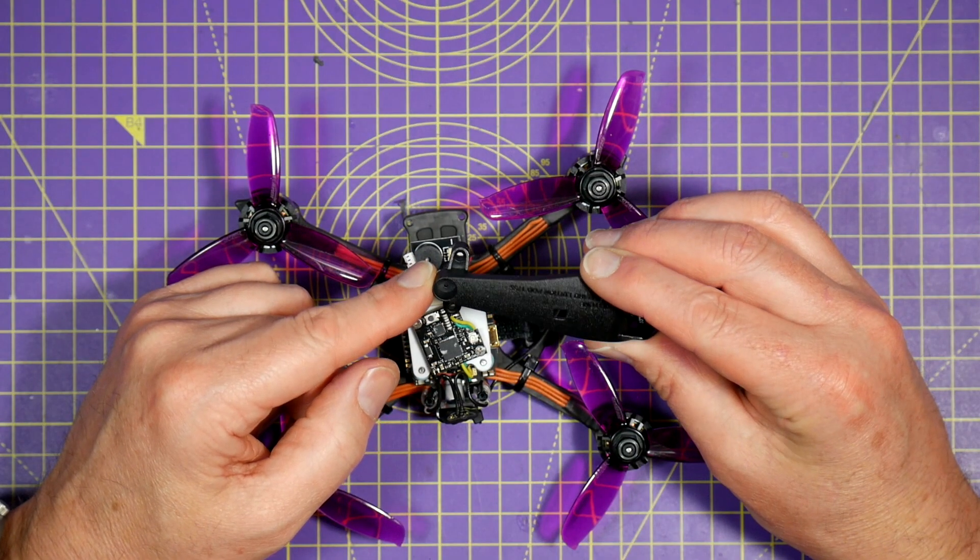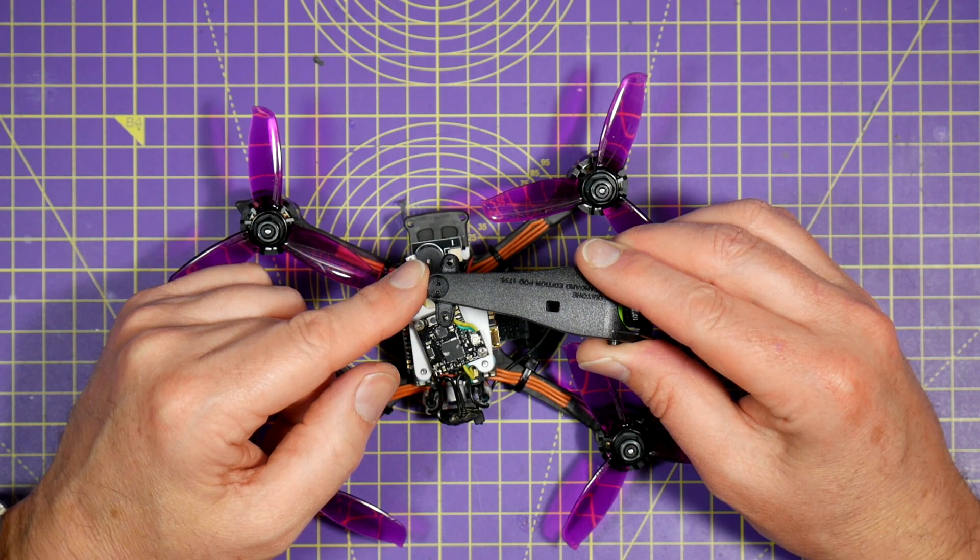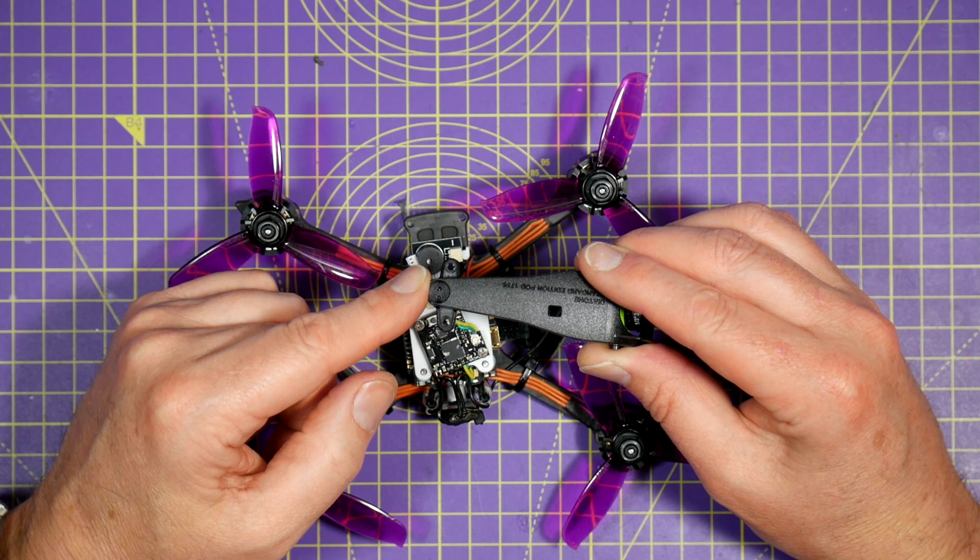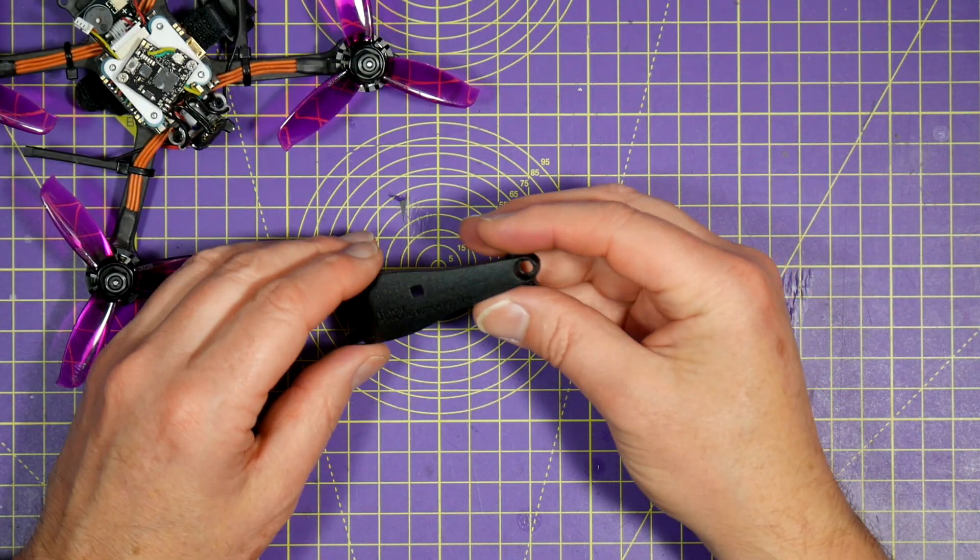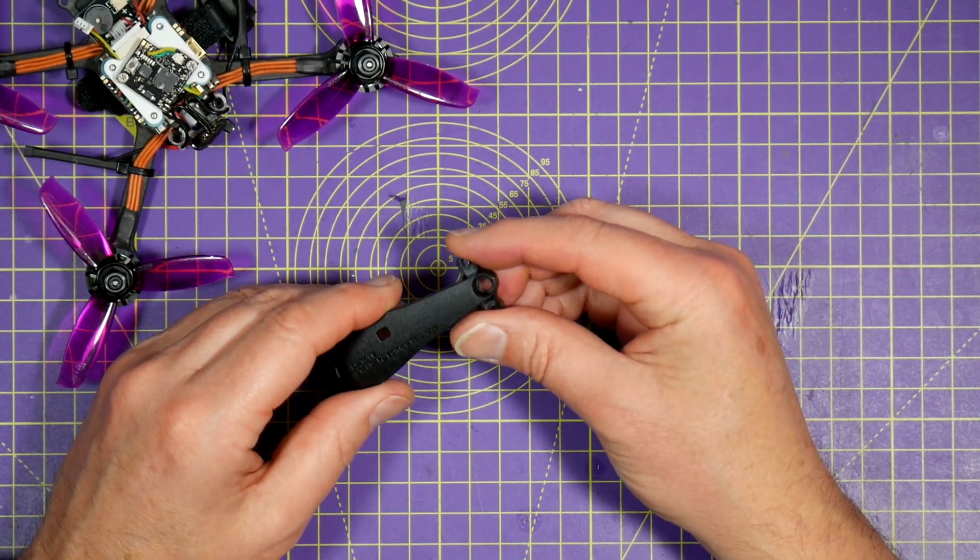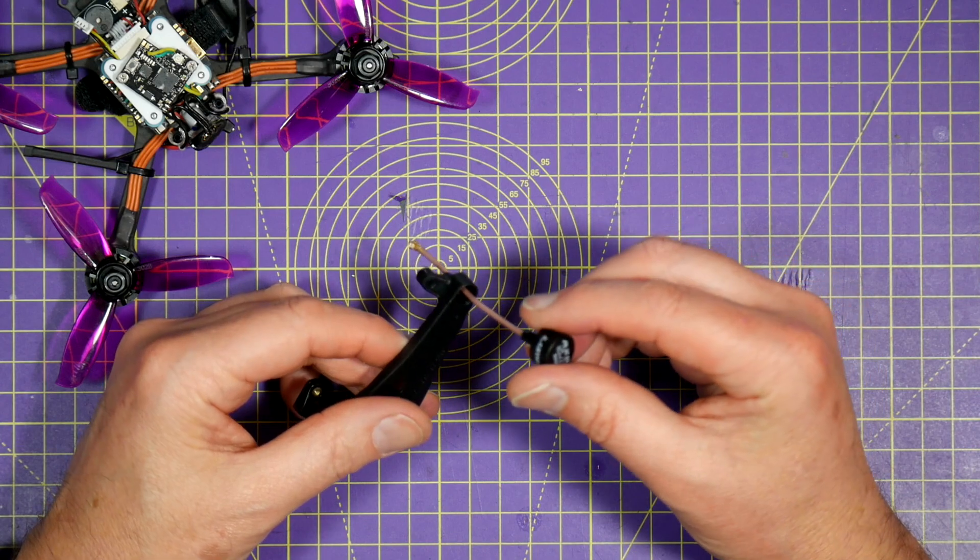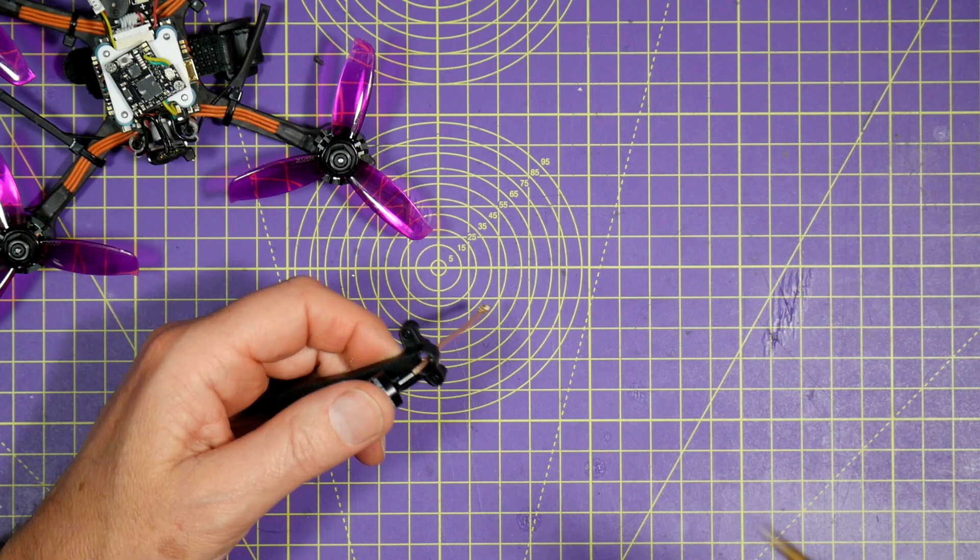This section looks like Diatone were sort of planning to fit the buzzer in here. Carefully drill a four millimeter hole through the plastic and push the antenna through and fix it in place with some hot glue.